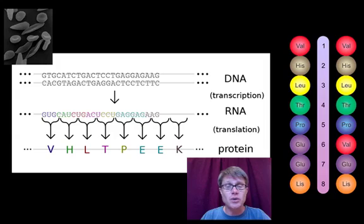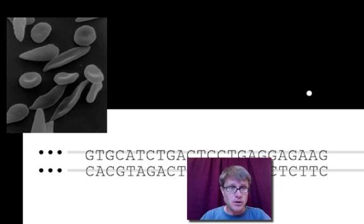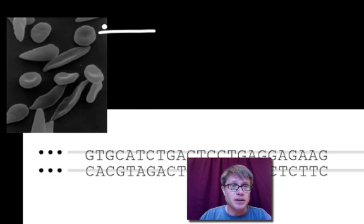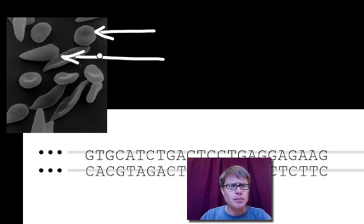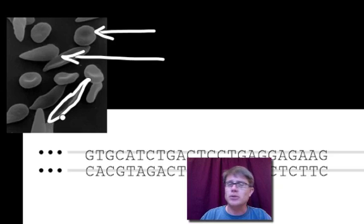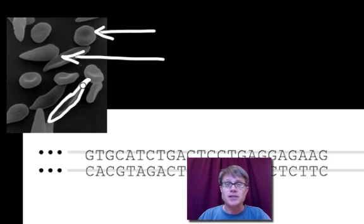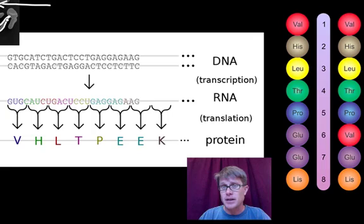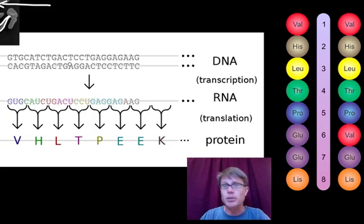One of the most famous examples biology teachers always discuss is sickle cell anemia. A regular red blood cell looks round, but if you have sickle cell anemia your red blood cell has this sickle-shaped appearance. It leads to a lot of other problems within your body, but it's simply a change in one letter. How could a change in one letter in the DNA cause this huge change in the blood cell itself?